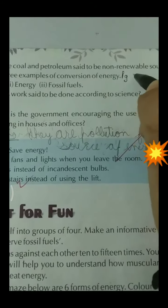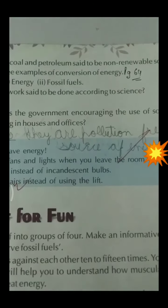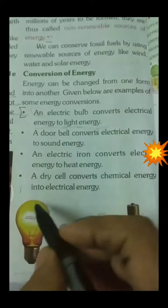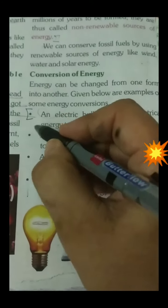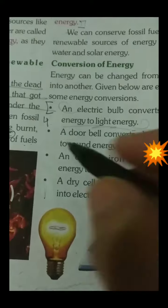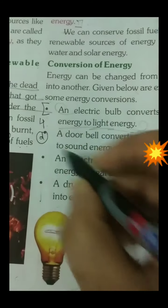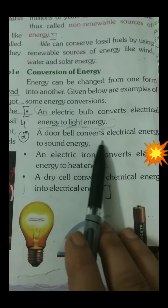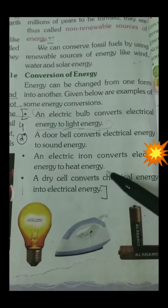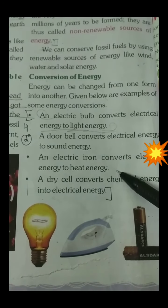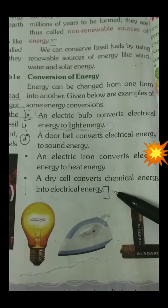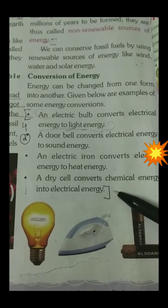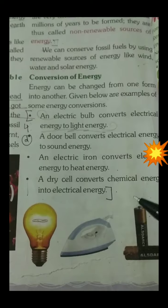Part D: Give three examples of conversion of energy. See page number 64. Out of these four examples, write any three. An electric bell converts electric energy to light energy. A doorbell converts electric energy to sound energy. An electric iron converts electric energy to heat energy. A dry cell converts chemical energy into electrical energy. Write any three of these four.